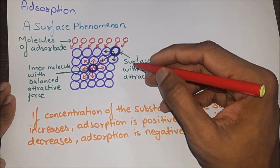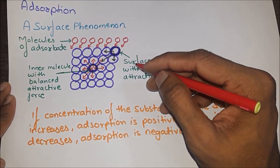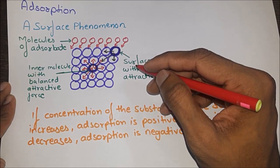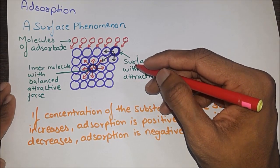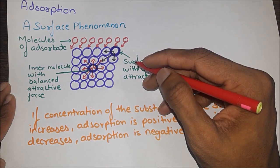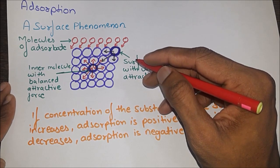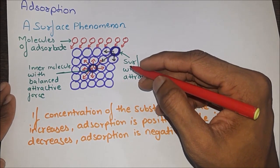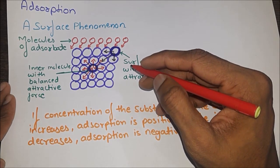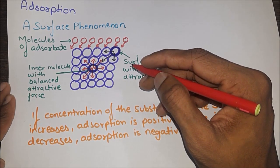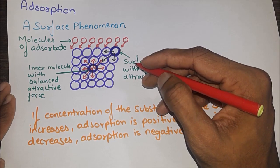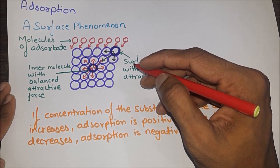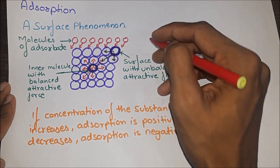Adsorption is defined as a phenomenon of accumulation of one substance on the surface of another substance such that there is a change in concentration at the interfacial layer between two phases without sensible penetration into it. Adsorption is also known as a surface phenomenon.